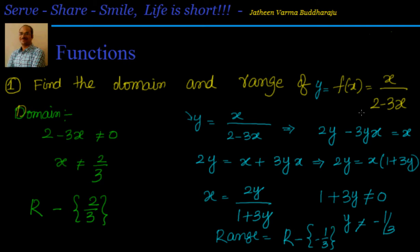This is an interesting method to find the range whenever functions are complicated. Whatever is given to you, take it equal to y, then find x in terms of y. You will clearly see the condition — here 1 + 3y cannot be equal to 0 if I want to define x, meaning y cannot be equal to -1/3. So the range excludes that value; all remaining values are allowed.